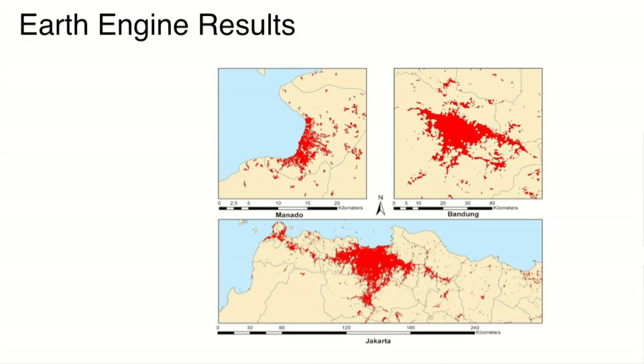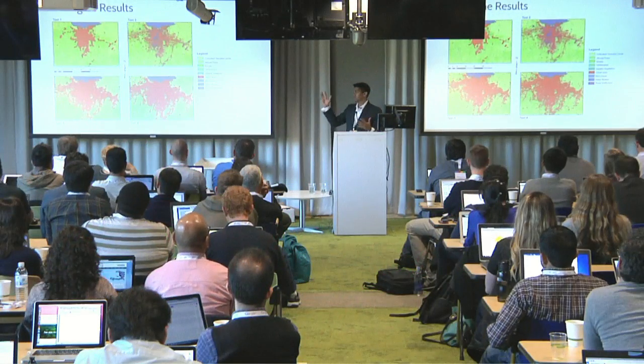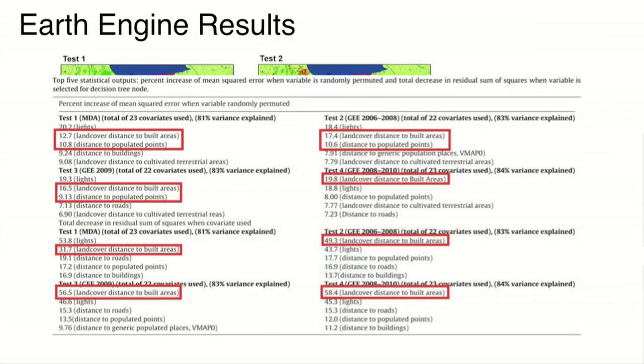We recently had a paper published on research done in collaboration with Dr. Paolo Gamba, providing urban extraction results for different areas in Indonesia. We compared the statistical performance of our population mapping method: test one used our control 2007 MDA federal geo-cover dataset, while tests two, three, and four used urban extents extracted from Google Earth Engine for different sets of years. The key finding is that integrating these new urban extents — particularly for land cover distance to built areas and distance to populated points — significantly improved the performance of our method and gave us better results.